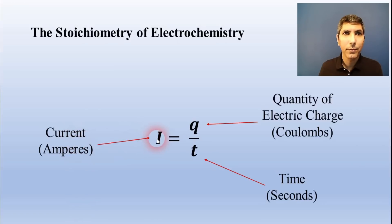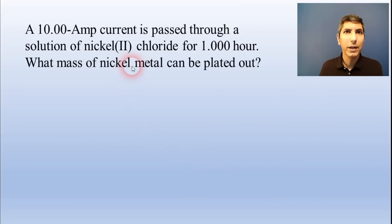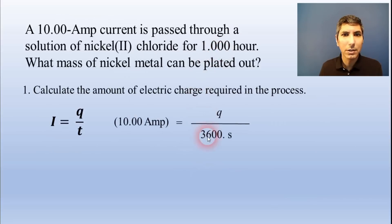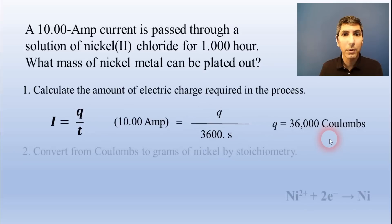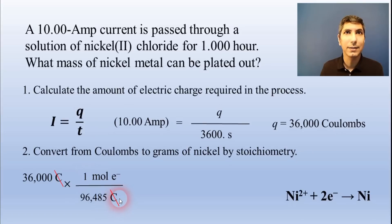The current in amps equals the total quantity of charge transferred in Coulombs divided by the time in seconds. So, if we have this nickel plating process and we run a 10-amp current for one hour, which is 3,600 seconds, we'll transfer 36,000 Coulombs of charge. To convert that into grams of nickel, we use stoichiometry. Step one is to convert to moles using Faraday's constant. The balanced half reaction tells us we need two electrons to produce one atom of nickel. And then, we convert to grams using the atomic mass.